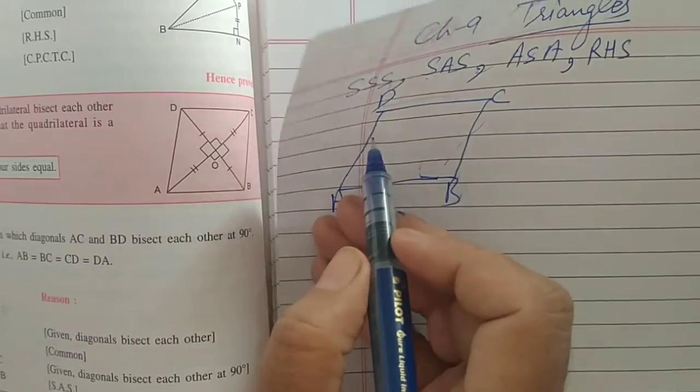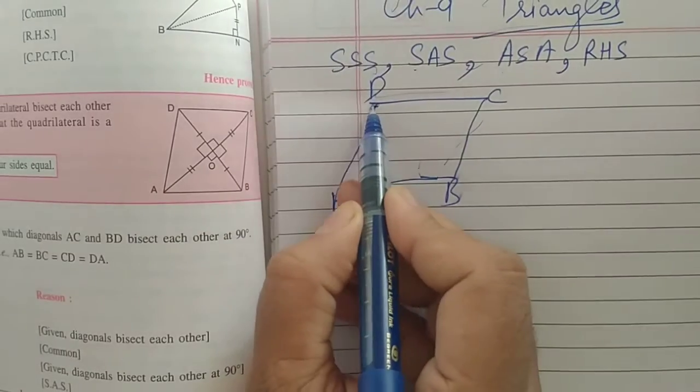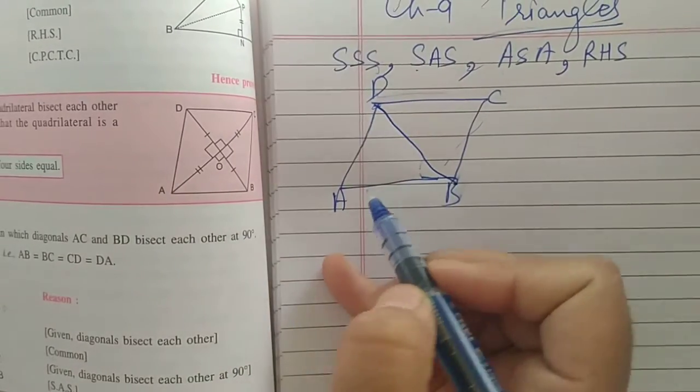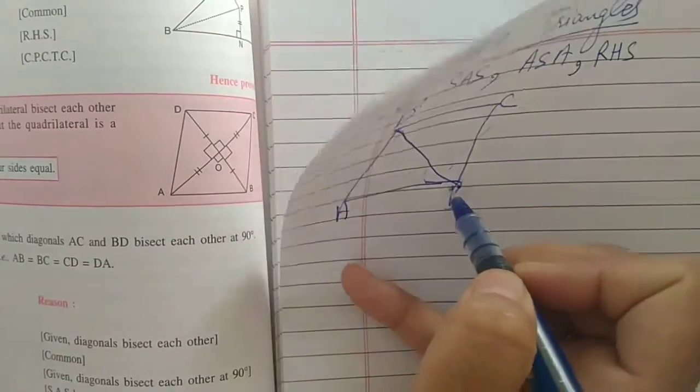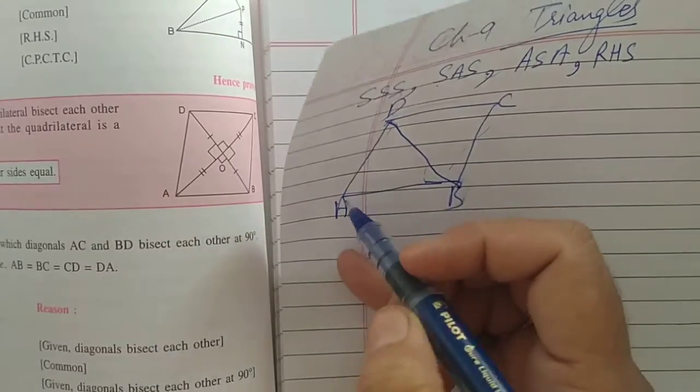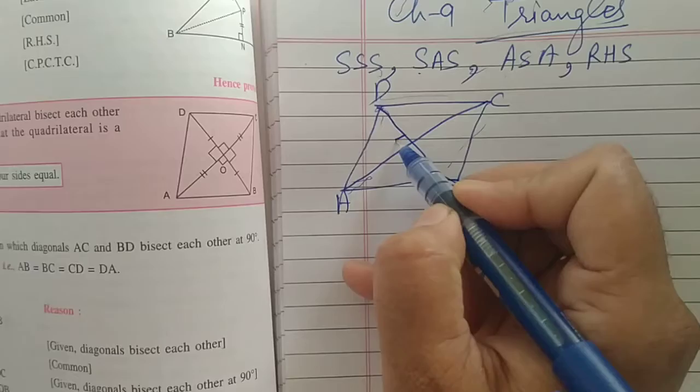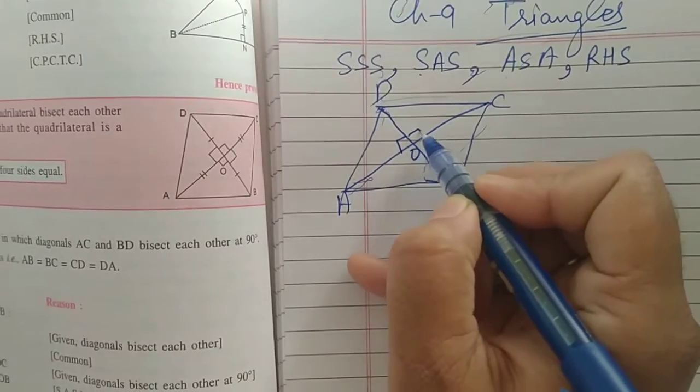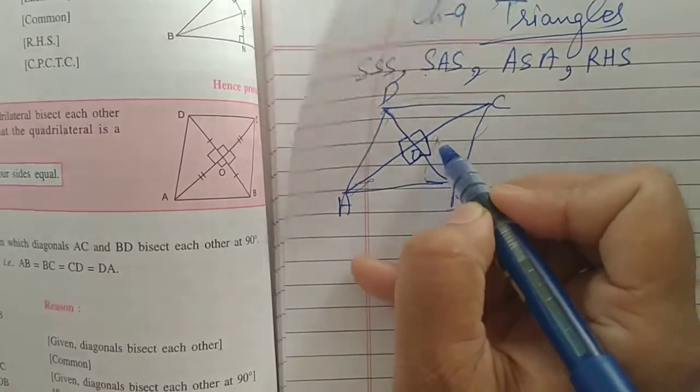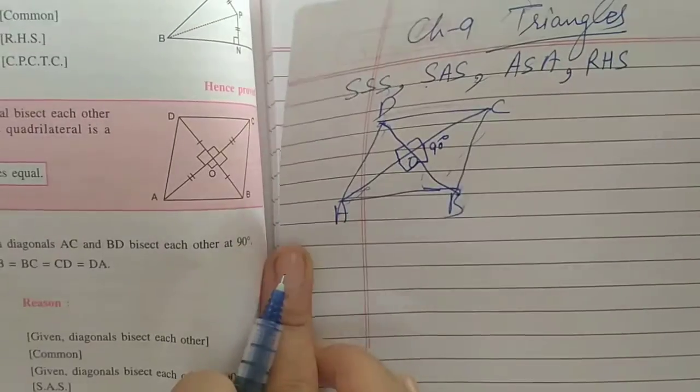So, diagonal means opposite vertex. When we will join opposite vertex, this line is known as diagonal. So, two diagonals are there. They will intersect here at point O, and these angles will be formed. These are of 90 degree.